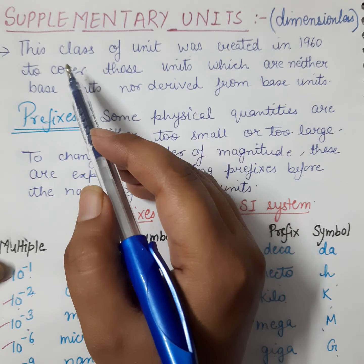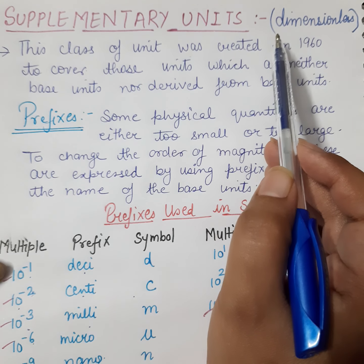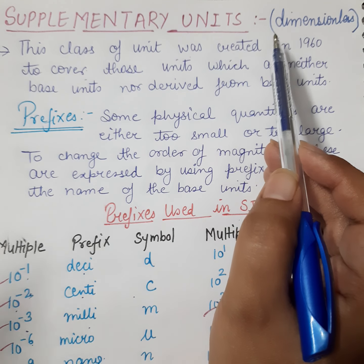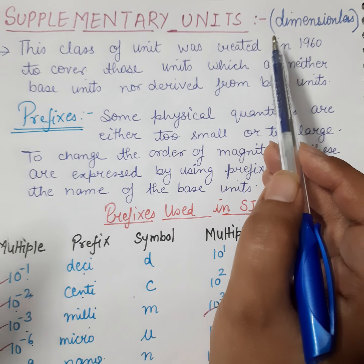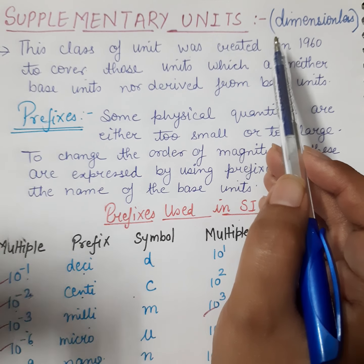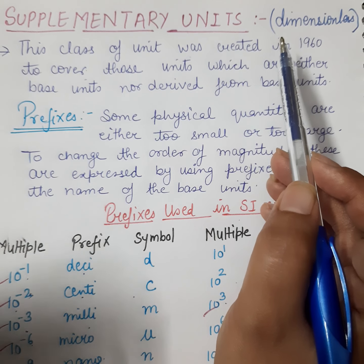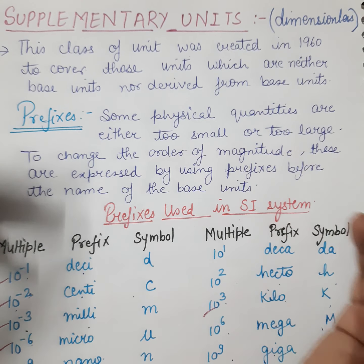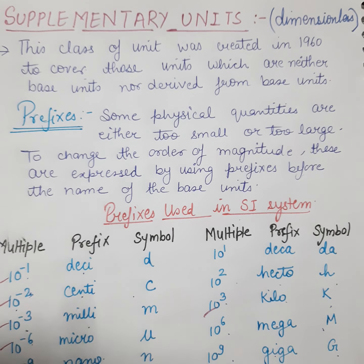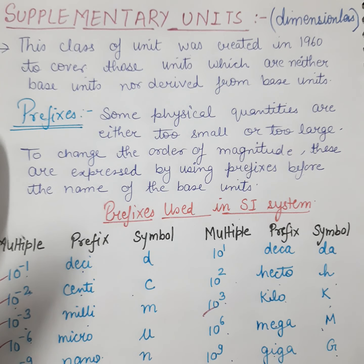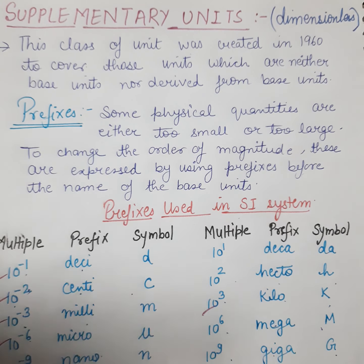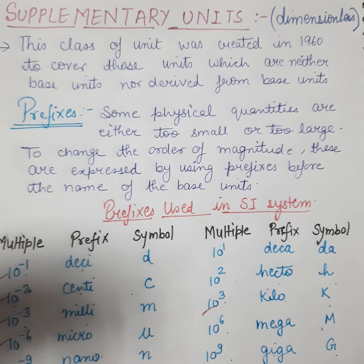Supplementary units are dimensionless and are employed with the fundamental units to create derived units. They are utilized in two major variables: phase angles and solid angles. We will discuss phase angles and solid angles in the next class. This class of units was created in 1960 to cover those units which are neither base units nor derived from base units.